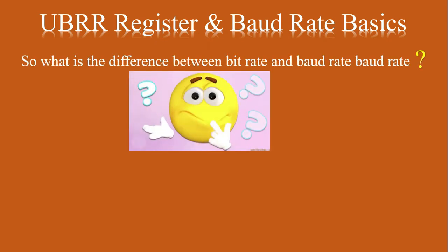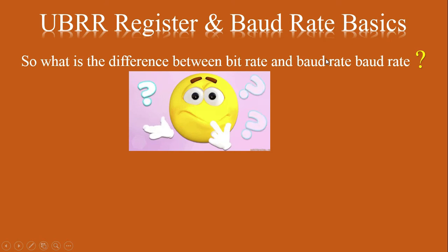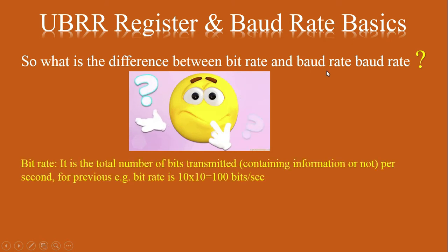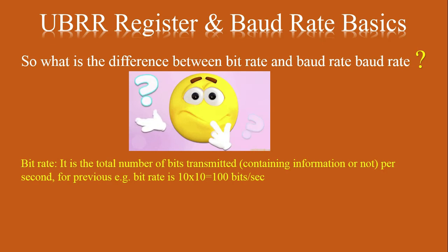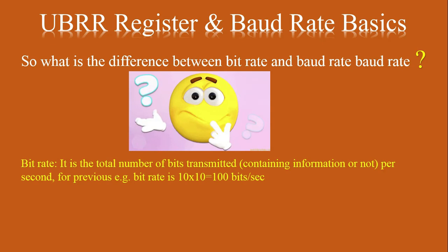Now, since baud rate is measured in bits per second, what is the difference between bit rate and baud rate? Bit rate is defined as the total number of bits transmitted per second. In the previous case, 10 frames × 10 bits = 100 bits transmitted per second, so 100 bits per second is the bit rate, while baud rate is 80 bits per second. Always remember: baud rate is always less than bit rate.